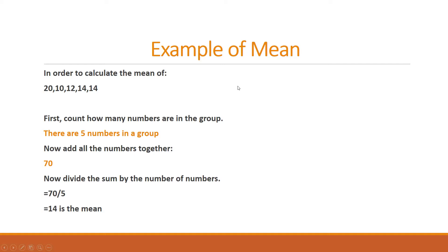Here we will discuss an example in order to understand the mean. In order to calculate the mean of 20, 10, 12, 14, 14, these are five numbers in a group. We have to calculate the mean. So first count how many numbers are there in a group. There are five numbers in a group.